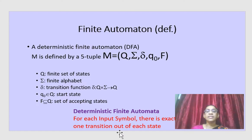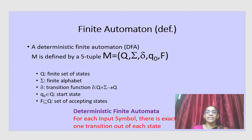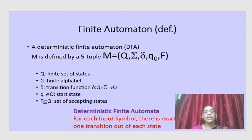We call this a deterministic finite automata because for each input symbol there is exactly one transition out of each state. That is, from any state with a given input symbol, there will be only one output — it will go to only one state. That is why we say it is a deterministic finite automata.